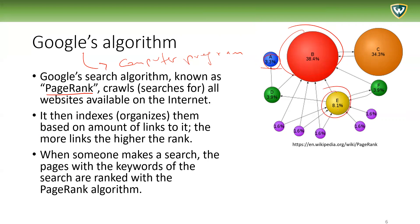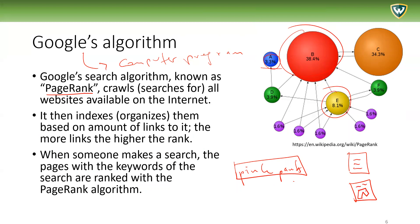Website E has eight links to it. When someone makes a search, the pages with the keywords of the search are ranked using the PageRank algorithm. So if you search for 'pink pants,' it searches for all websites containing those keywords, and Google's algorithm uses this page ranking to sort which sites go first and which go later. Generally, the sites with the most links to them will be listed on top. That's a bit of how the PageRank algorithm works.